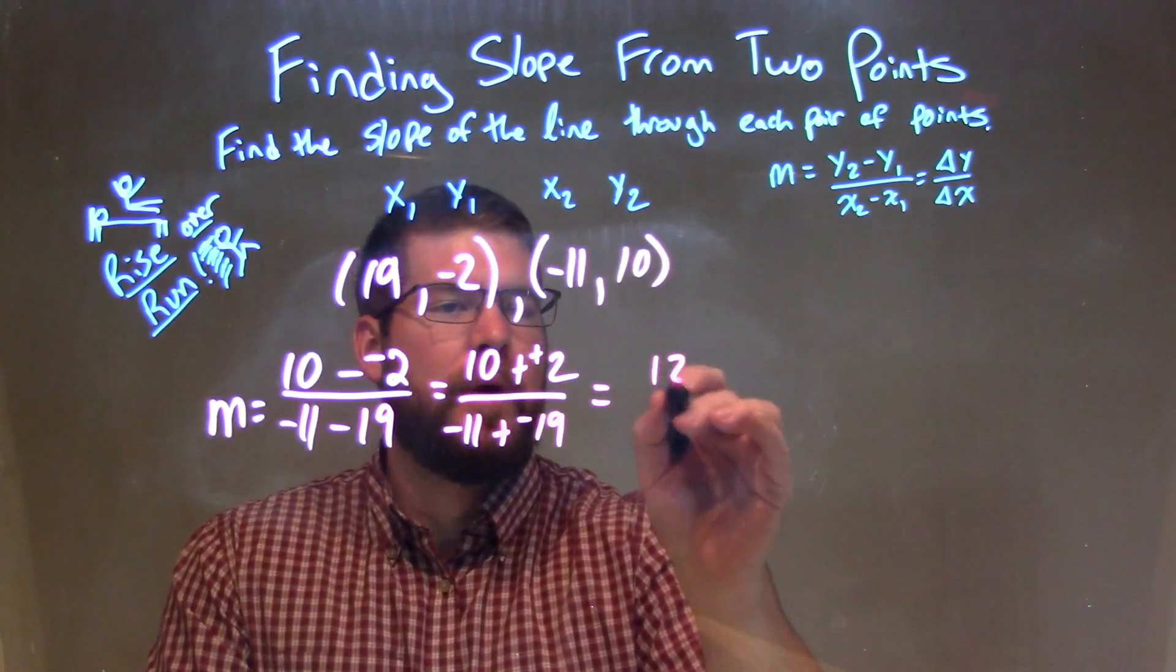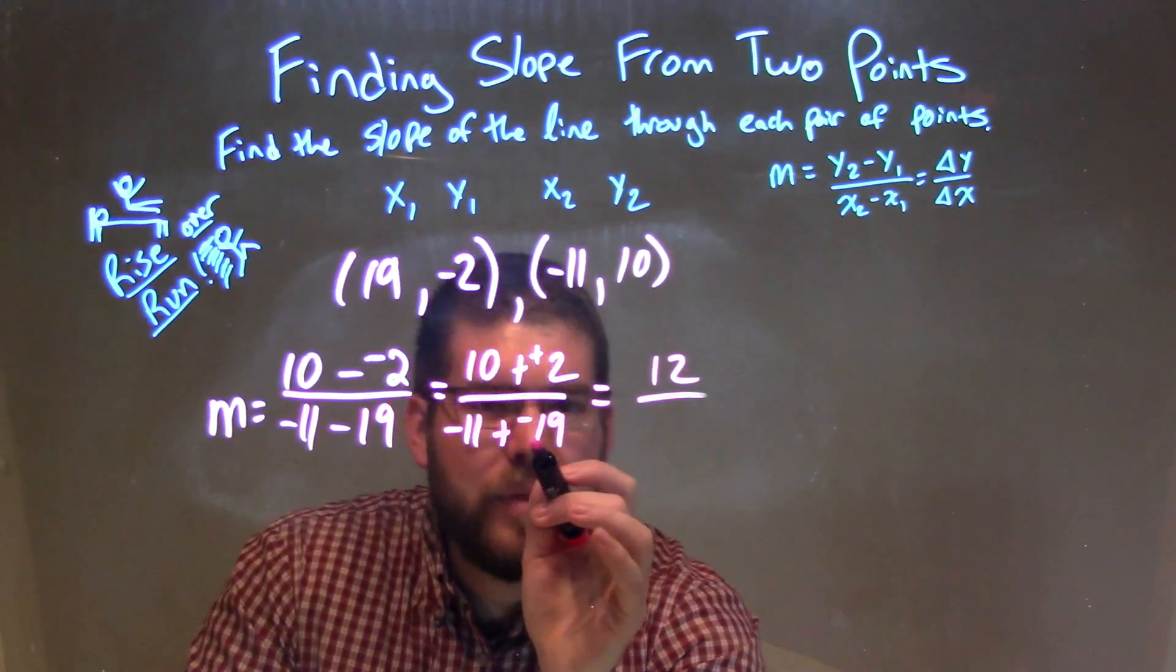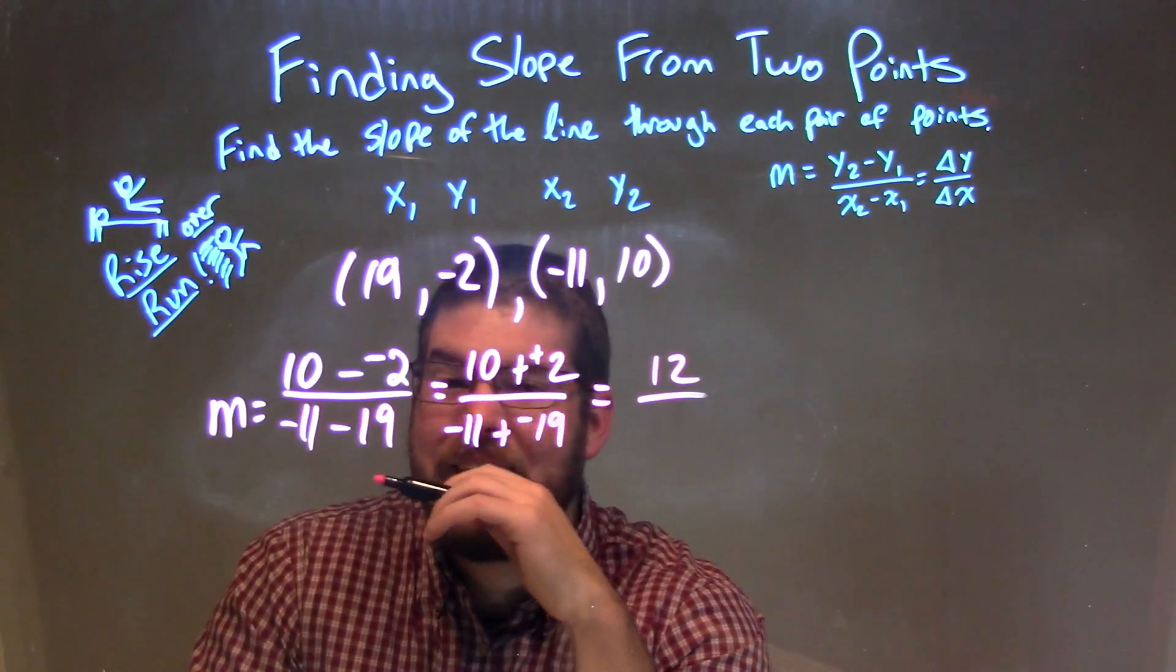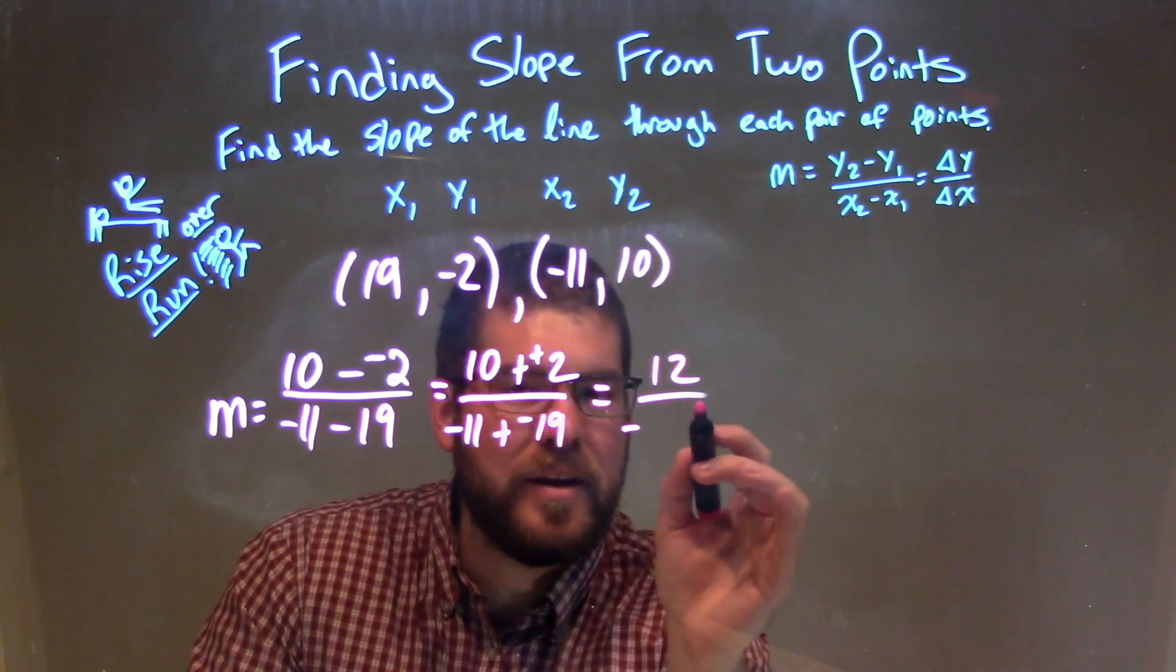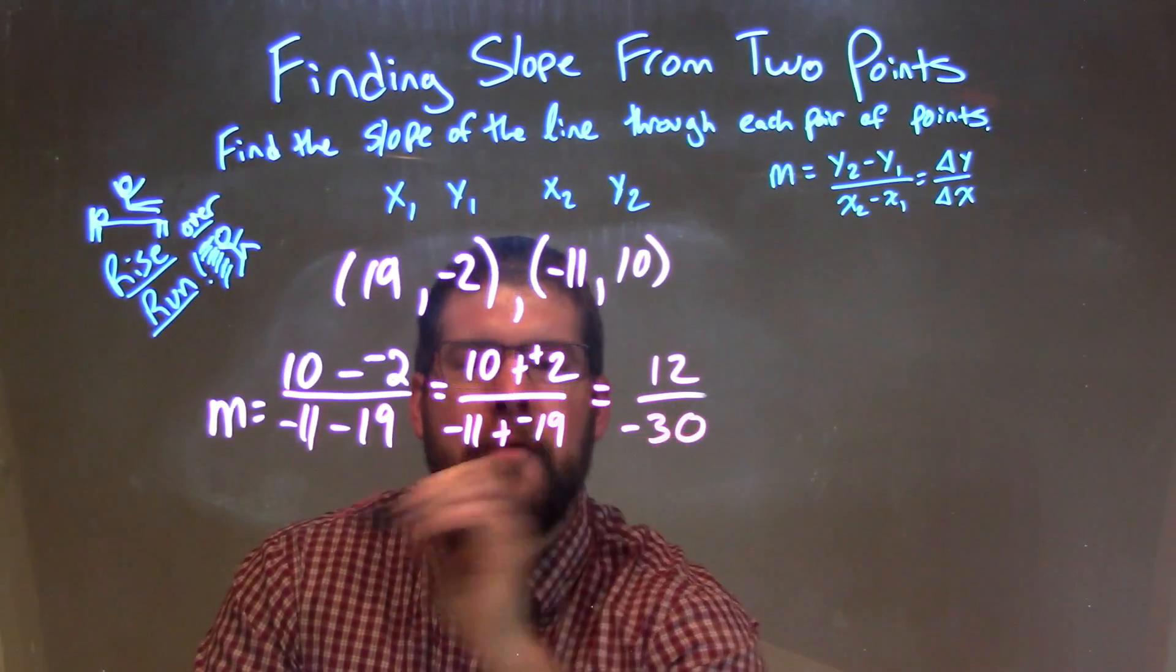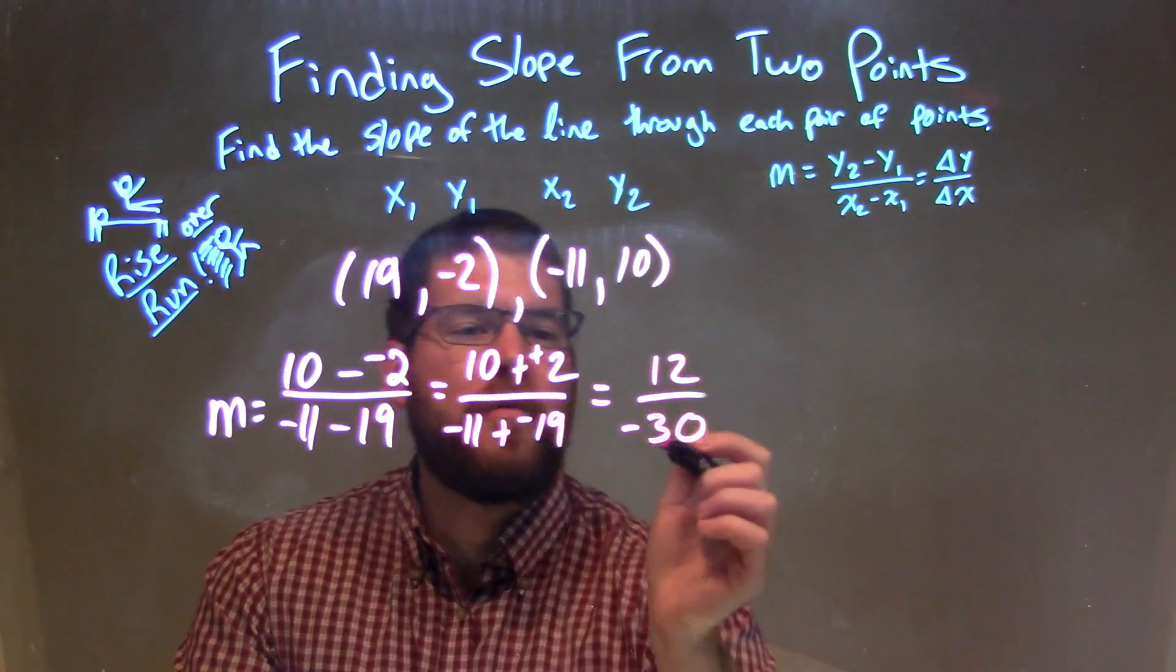Well, 10 plus 2 is easy, that's 12. And negative 11 plus a negative 19 is a negative 30. So we have 12 over negative 30, we can simplify that.